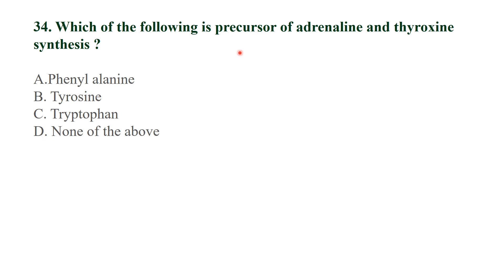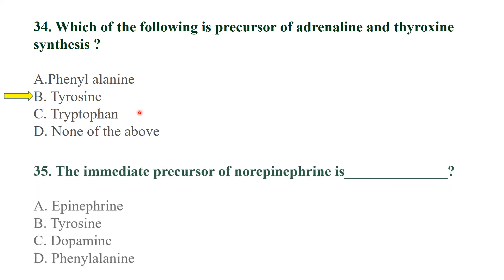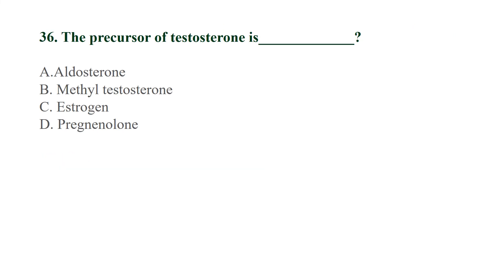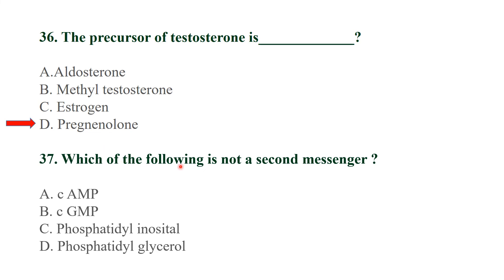The immediate precursor of norepinephrine is dopamine. The precursor of testosterone is pregnenolone. The following is not a second messenger: phosphatidyl glycerol is not a second messenger.